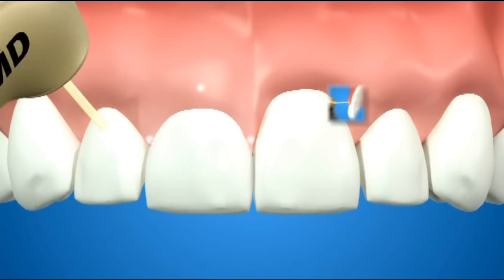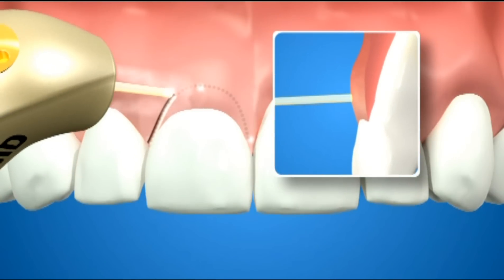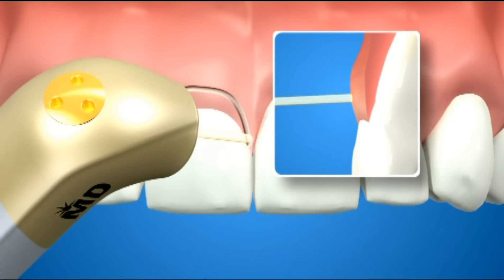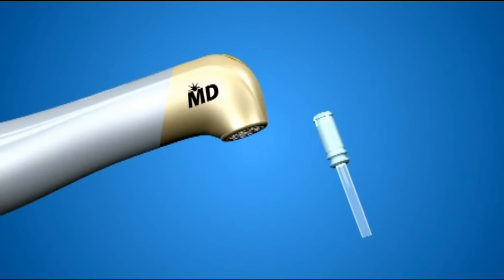For thick fibrotic gingival biotypes, use the full thickness technique. Angle the tip at 90 degrees while moving across and down to achieve a full thickness incision.